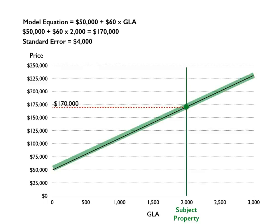If we were to draw an area around the regression line, it would look something like this — but that's only for one standard error plus or minus. In order to calculate confidence, we have to go to a t-table and find out how many standard errors we need on either side of our line. We plug in the degrees of freedom and the confidence level we want, and we find that we have to use 2.3 standard errors from either side of our estimate.